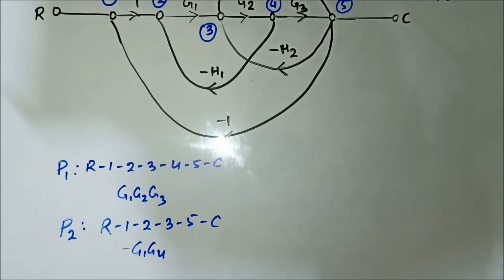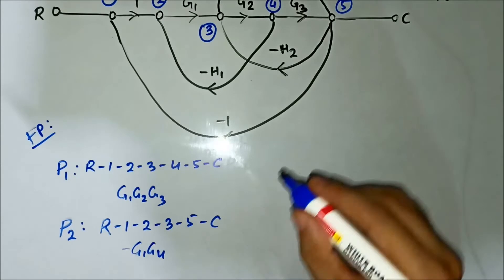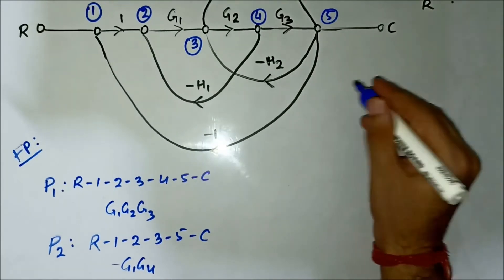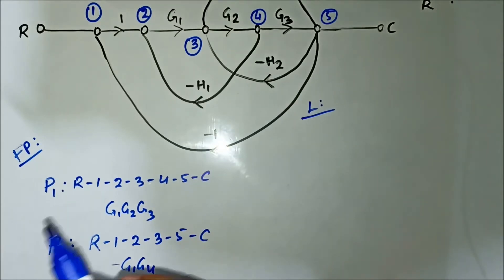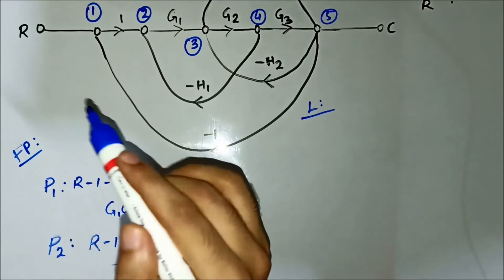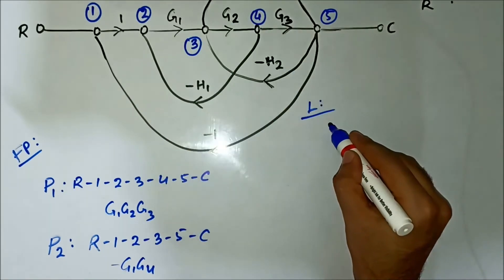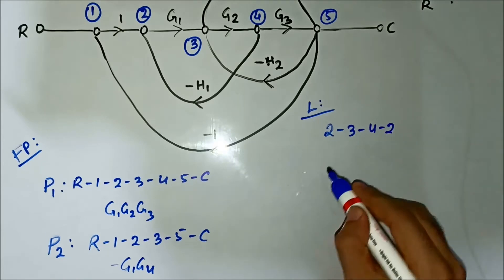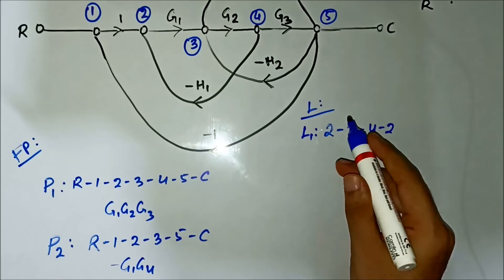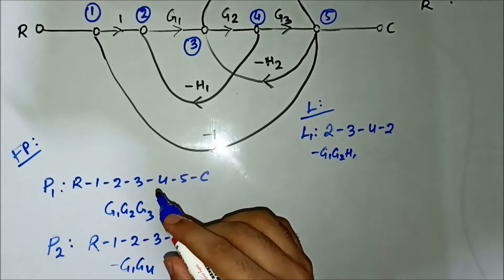So those are the two forward paths — there are no more. Now it's the turn of the loops. One loop is 2→3→4→2, starting and ending at the same node. Let's call it L1.